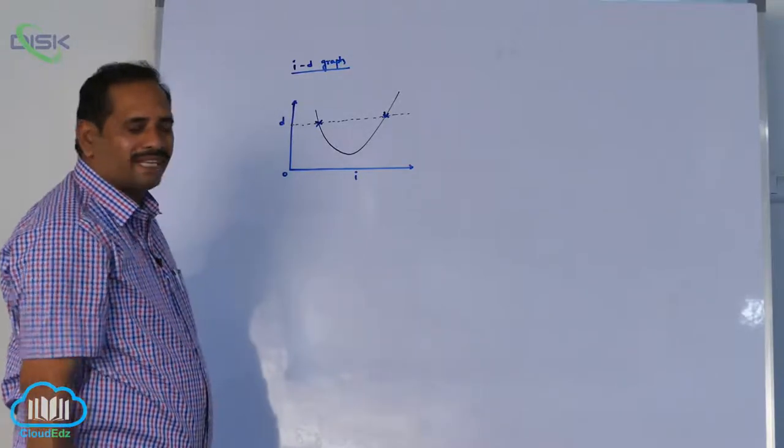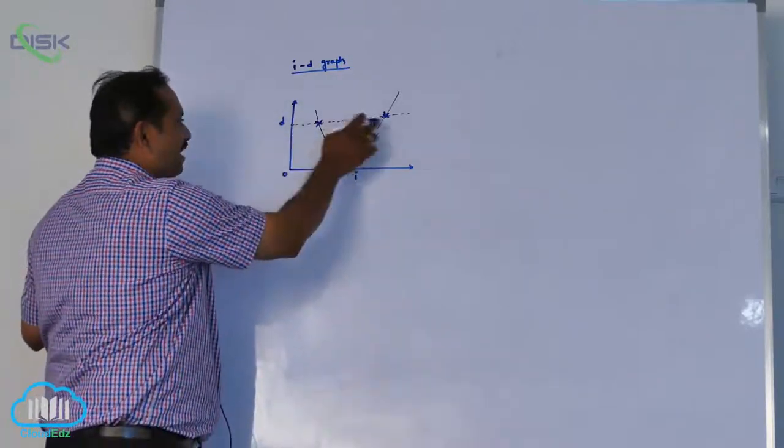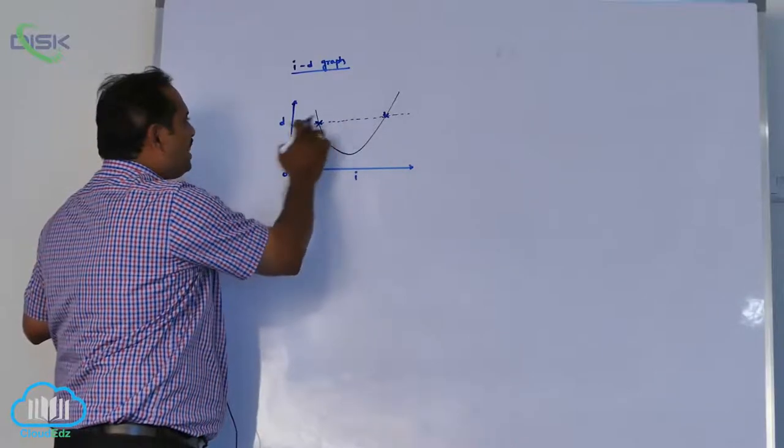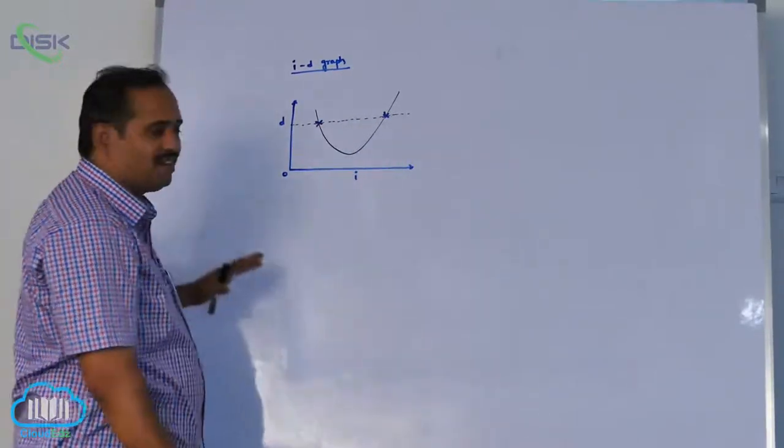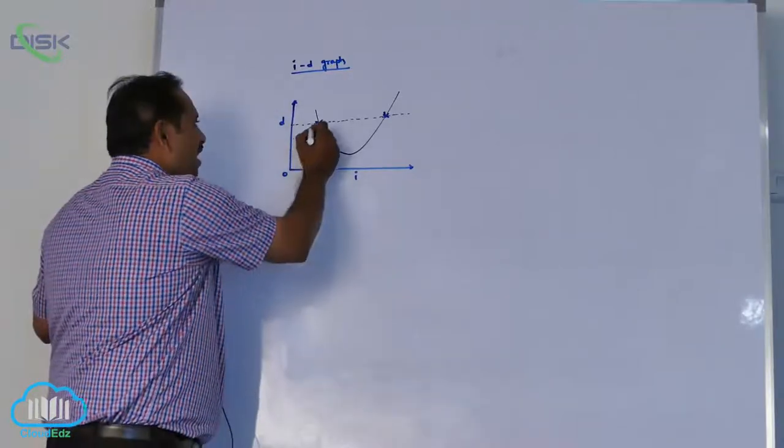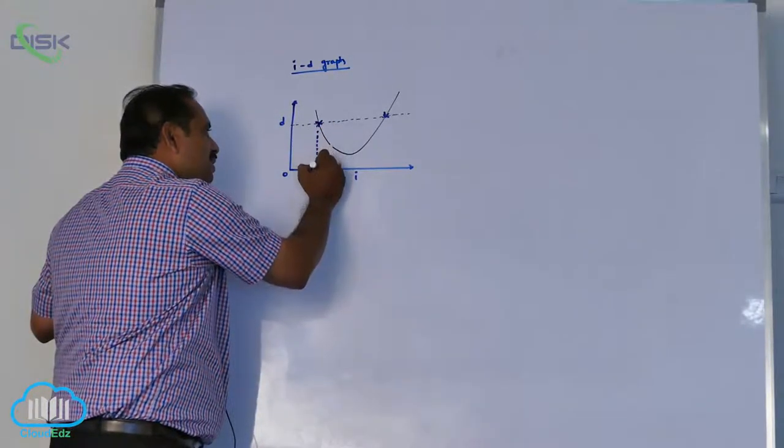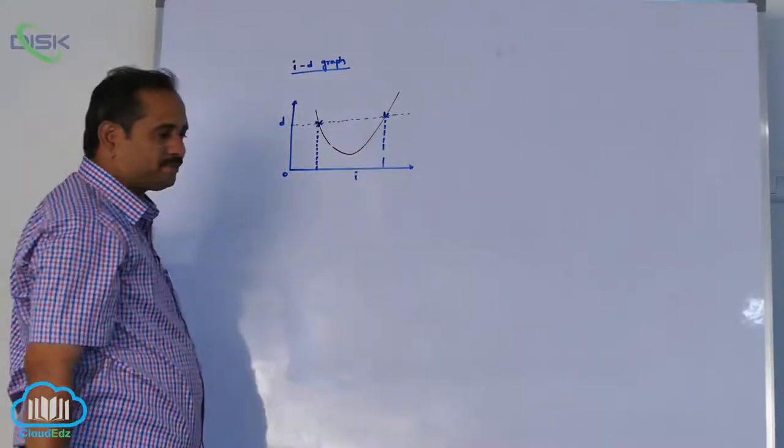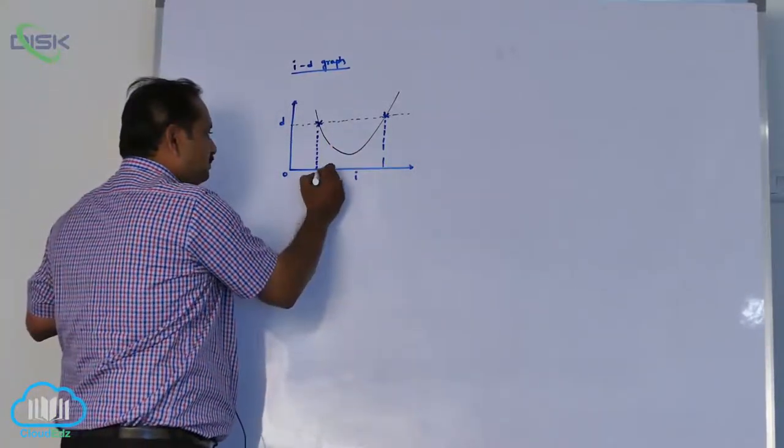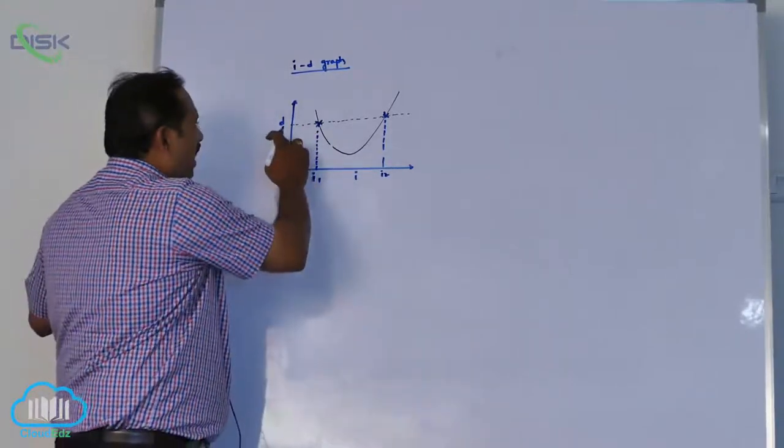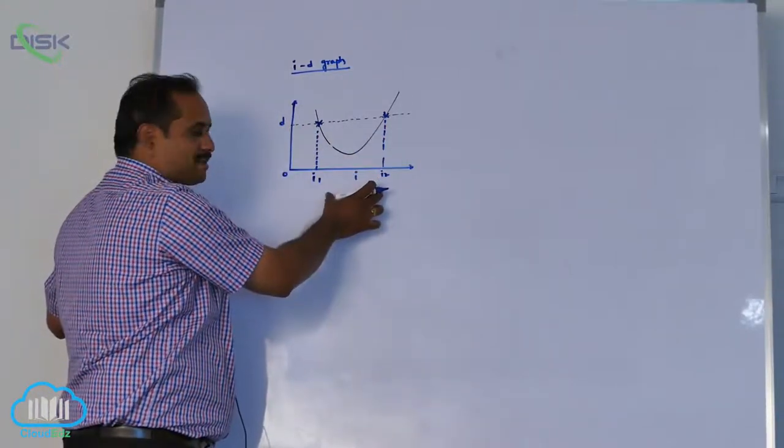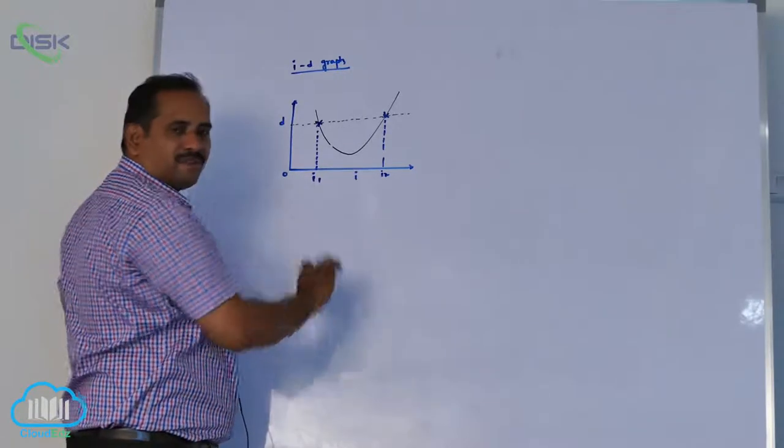Two intercepts indicates, parallel line means y-coordinate quantity is constant. That means for same deviation, I am finding two angle of incidences like this: i1, i2. If you draw anywhere, you get two intercepts, angle of incidence and angle of emergence.